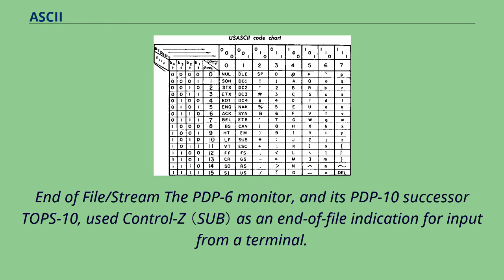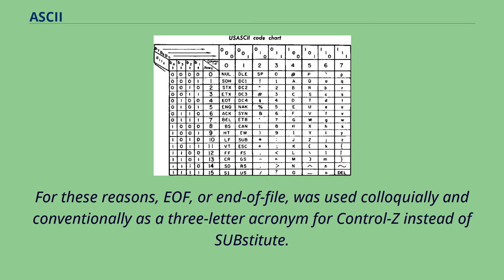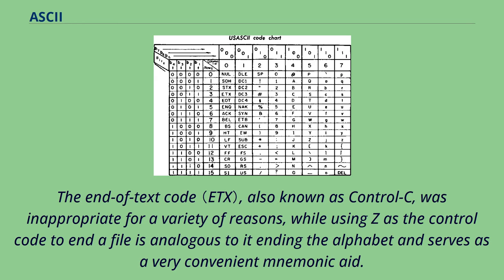End-of-file/stream: the PDP-6 monitor and its PDP-10 successor TOPS-10 used Ctrl-Z as an end-of-file indication for input from a terminal. Some operating systems such as CP/M tracked file length only in units of disk blocks and used Ctrl-Z to mark the end of the actual text in the file. For these reasons, EOF, or end-of-file, was used colloquially as a three-letter acronym for Ctrl-Z instead of SUBSTITUTE. The end-of-text code, also known as Ctrl-C, was inappropriate for a variety of reasons, while using Z as the Ctrl code to end a file is analogous to it ending the alphabet and serves as a very convenient mnemonic aid. A historically common and still prevalent convention uses the ETX code convention to interrupt and halt a program via an input data stream, usually from a keyboard.